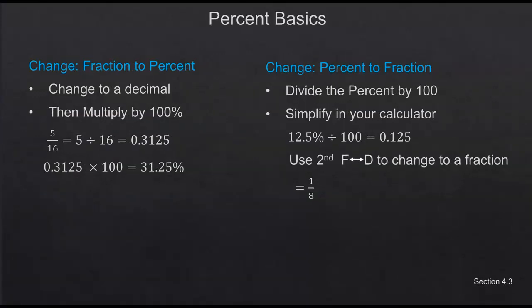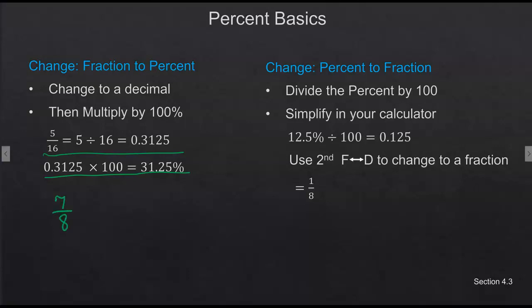Now let's look at changing a fraction to a percent. We've already worked with fractions and written them in decimal form, so you should be familiar with this process. Then we just use what we talked about to write a decimal in percent form. The numerator 5 divided by 16 gives us 0.3125; times 100, that's 31.25 percent. For seven-eighths: 7 divided by 8 equals 0.875, move the decimal two places — 87.5 percent.